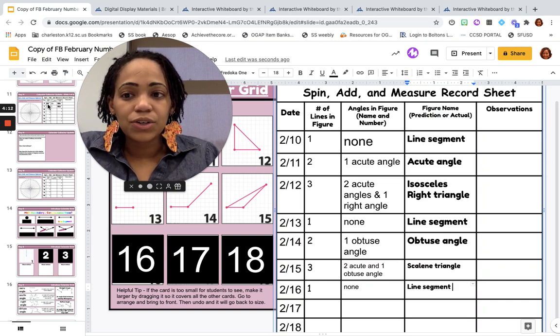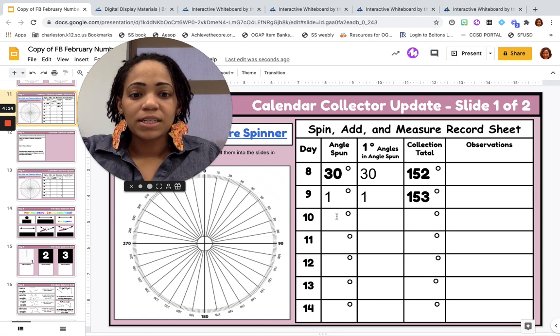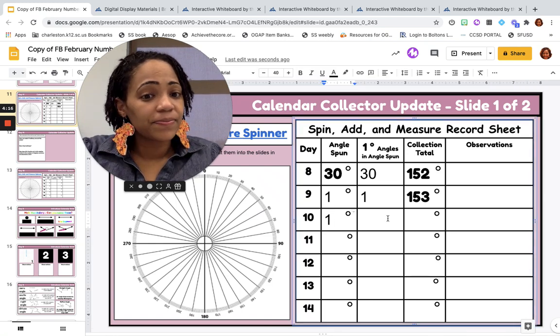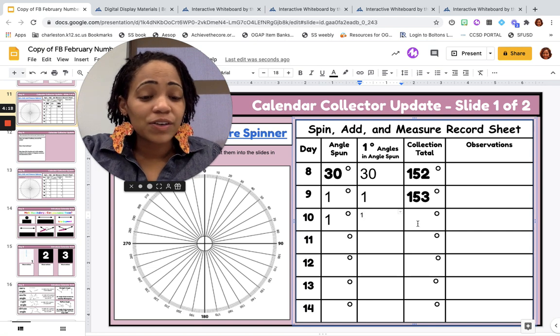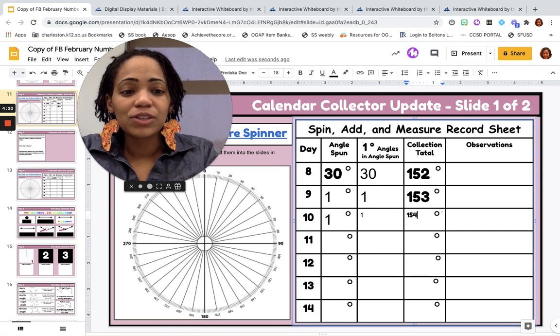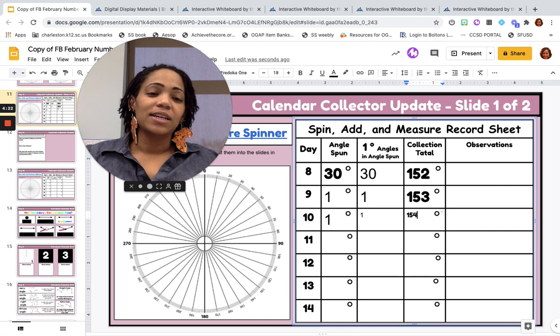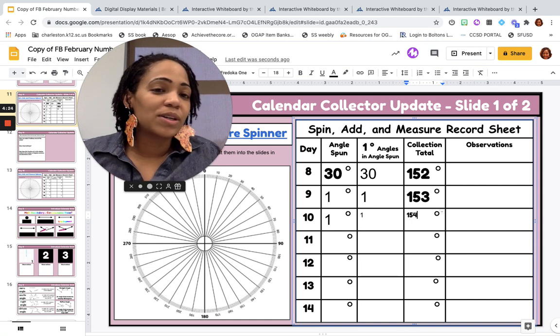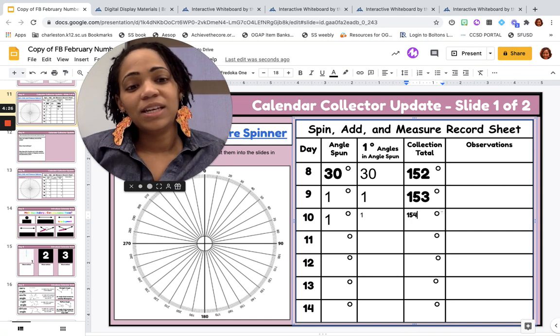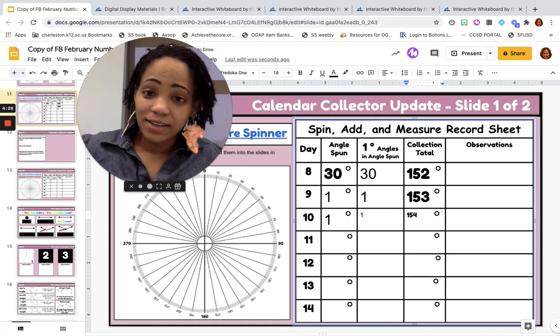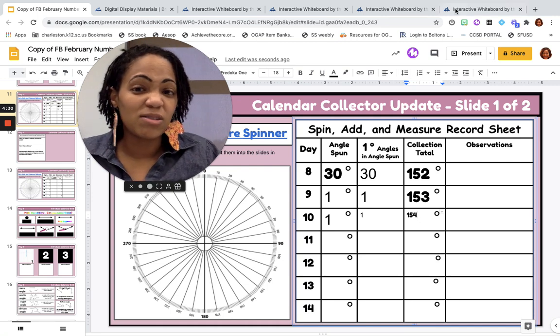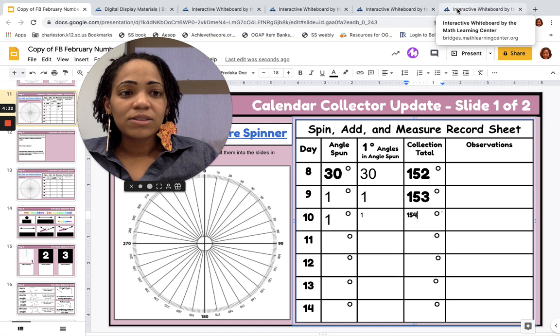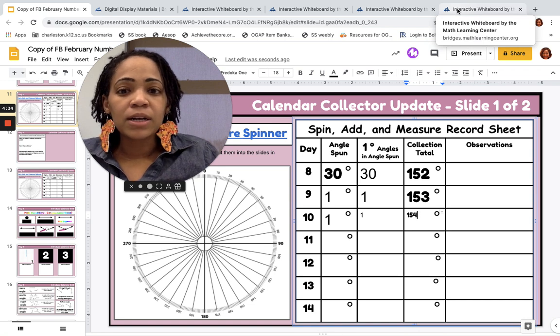I can update that on my recording sheet as well, which is here. We collected another degree, which is one one-degree angle, and now we are sitting at 154 degrees. Really close to one of those straight angles. We'll see if we'll get there. If we spin a 30-degree tomorrow, we'll be past the straight angle actually.